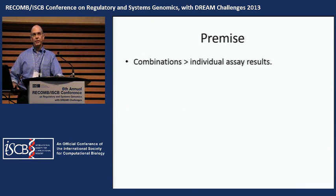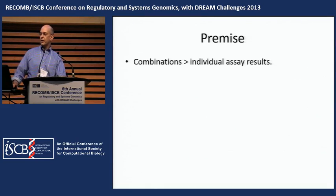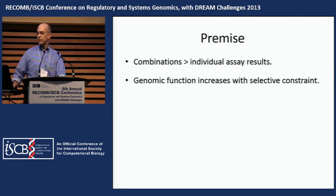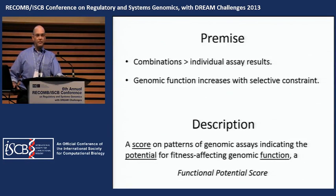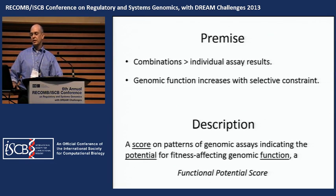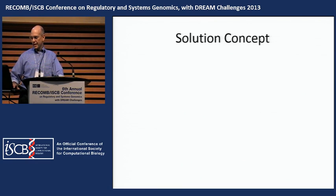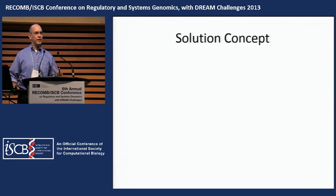The core premises of this work are broken into two parts. One, the combination of assay signals is more informative than individual assays. And two, combinations of assay results identifying more evolutionarily constrained genomic processes will have greater phenotypical importance. We generate a conservation scoring on patterns of functional genomic assay results, indicating their potential for fitness-affecting genomic function — that is, a functional potential score. I'll be providing a conceptual illustration of the work, followed by the experimental details, and then provide some results at the end.